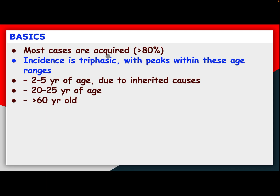Most cases are acquired — more than 80%. Incidence is triphasic with peaks within this age group: 2 to 5 years of age due to inherited cases, 20 to 25 years of age, and more than 60 years old.